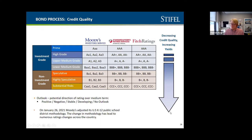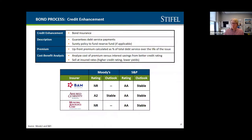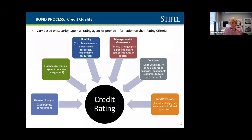Another concept to introduce is credit enhancement, which comes in two forms for Ohio school districts: bond insurance, and the Ohio School District Credit Enhancement Program. The Ohio program allows school districts to basically have the state intervene and give a rating of Double-A2 by Moody's or Double-A by S&P. It's a free program and is often very valuable.